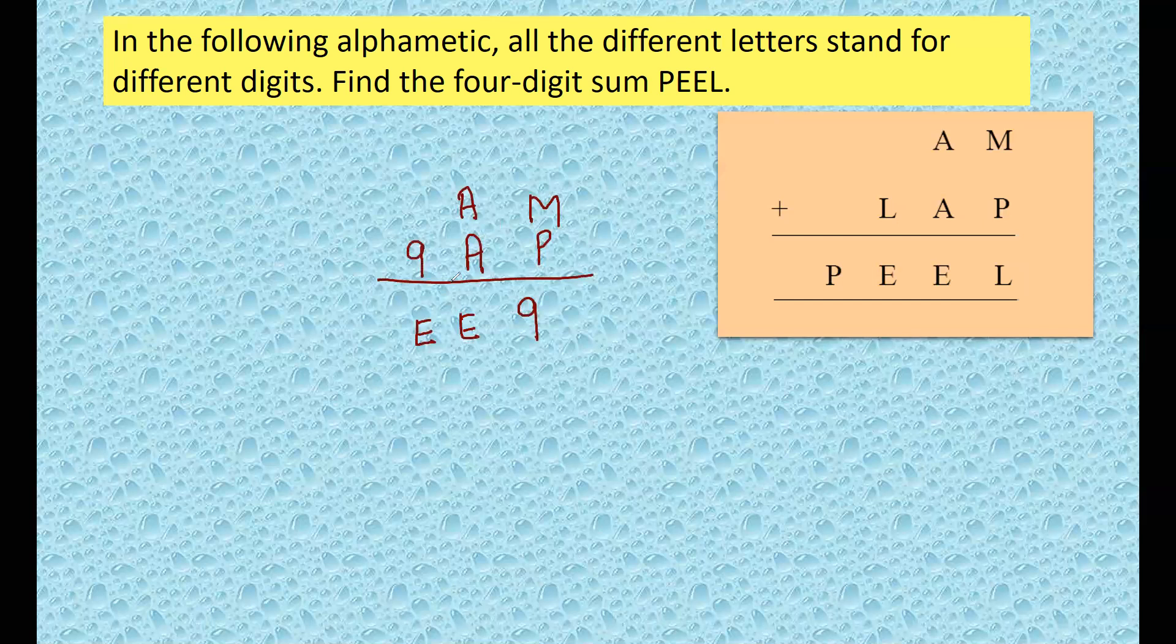So M, P, this becomes 9, this becomes A, this becomes E, and here we have 9. Little hit and trial and you can easily crack this question. Now here is P. What letters when we add can get 9 and you have to get the same letter? You can think that A will be 5, because 5 and 5 will give you 10. This will be 0, and P will be 1.